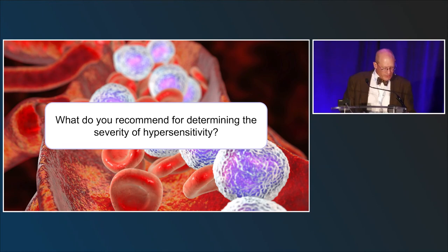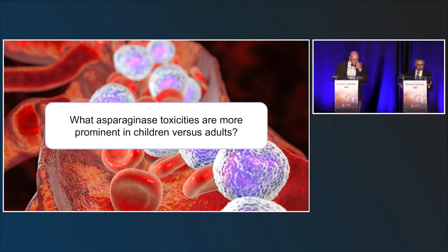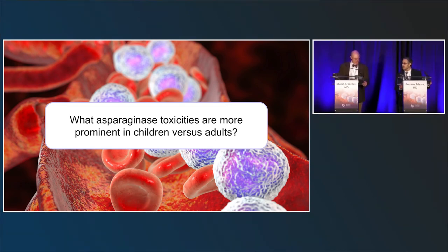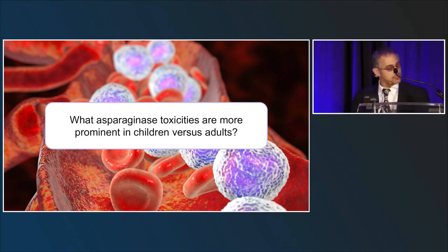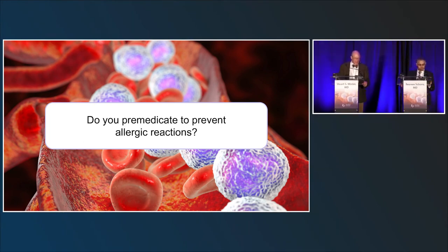Which asparaginase toxicities are more prominent in children versus adults? Most asparaginase toxicities are probably more troublesome in adults — older teenagers also have some adult-related problems, particularly hepatotoxicity risk, which is very significant in older and obese populations. Adult oncologists, besides routine dose capping, often won't give asparaginase at all above a certain age — somewhere between 30 and 50 — and will rely on non-asparaginase-based protocols.